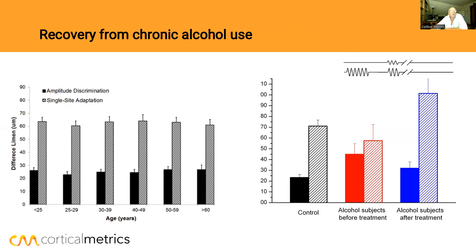These subjects were in a 12-week sobriety program. They had been drinking quite a lot and started out sober at the beginning of the program. After 12 weeks of sobriety, the amplitude discrimination score came down — their accuracy score improved. But what's really interesting is the adaptation score went way high. That difference is actually bigger than normal, so their plasticity is actually overcompensating.